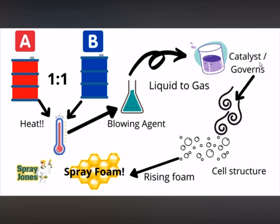The governor and the initiator for the speed of that chemical reaction is our catalyst. It's mixed in right in the middle with the blowing agent, as well as other products inside there such as fire retardants, surfactants, and plasticizers. Think of the catalyst as the gas pedal and the brake in your car — you can either speed the reaction up or slow it down and retard it. The catalyst mediates and governs how quickly it's going to convert from liquid to gas to cell structure.